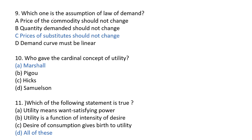Next question: which one is an assumption of the law of demand? Basically, the law of demand has many assumptions — the consumer's income should not change, the taste and preference of the consumer should not change, and the price of relative goods, substitute goods, or complementary goods should not change. So the answer will be C: the price of substitute goods should not change.